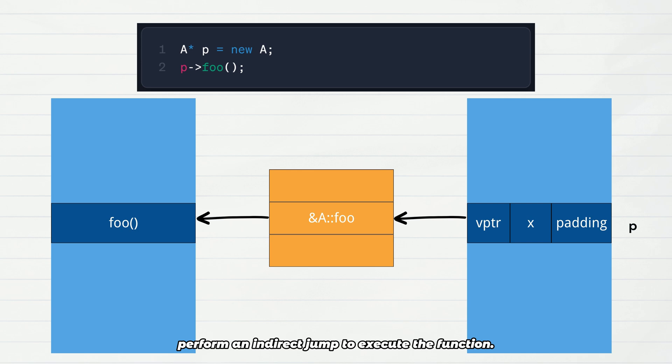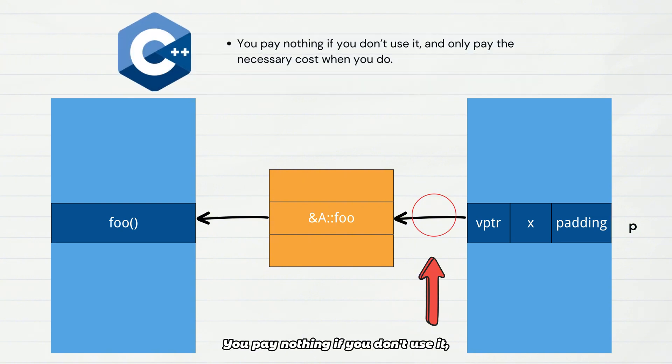This is the true cost of virtual functions: one extra pointer indirection compared to regular functions. But it trades this cost for the flexibility of runtime polymorphism. This is a classic example of C++ zero-overhead abstraction principle: you pay nothing if you don't use it, and only pay the necessary cost when you do.